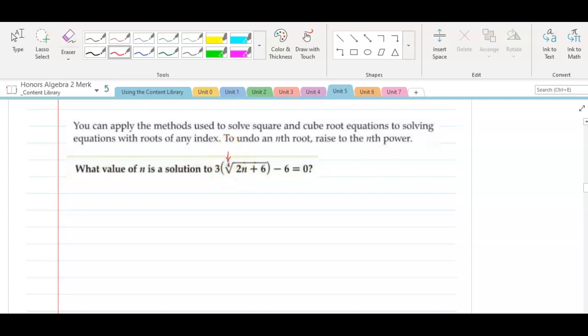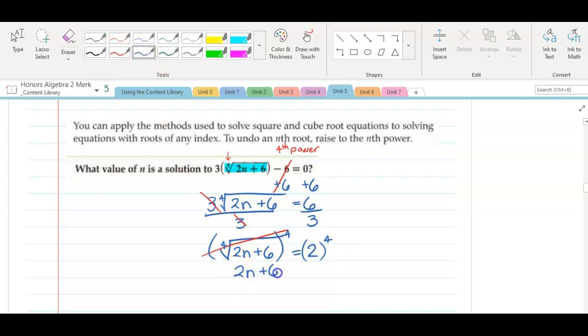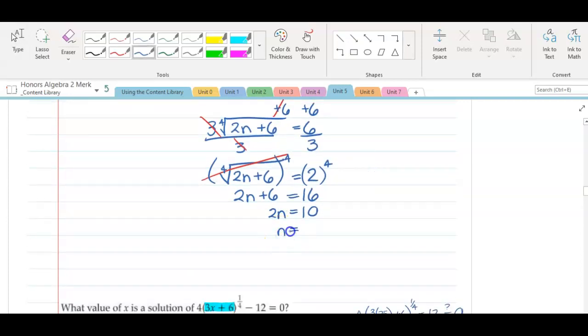So here's an example where we have an index of four. So in order to eliminate the radical, we're going to raise it to the fourth power. And this is what it will look like. We will add six first because remember, step one, we're trying to isolate the radical first. So we have three times the fourth root of 2n plus six equals six. Notice I eliminated the sixes. Now I'm going to divide by three so that I can eliminate my coefficient of three. That leaves me with the fourth root of 2n plus six equals two. So I raise it to the fourth power in order to eliminate the fourth root. It leaves me with 2n plus six equals 16. Subtracting six from both sides, I have 10. And finally dividing by two, I have five.